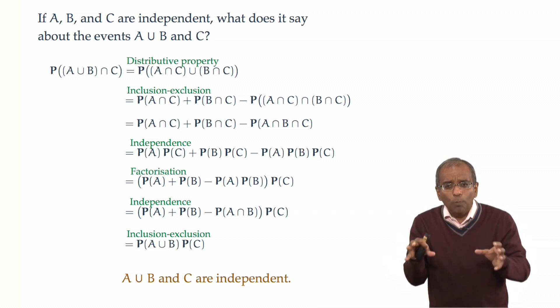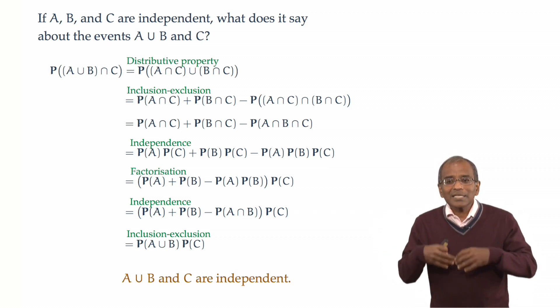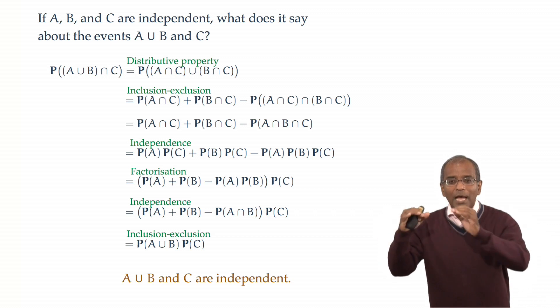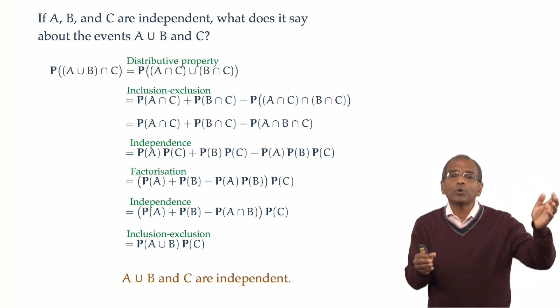Let's abstract the core principles that we have seen in our two examples. The first example said that if you have independent events and you complement one or more, you still get independent events. The second example says in words that if you have independent events and you form new events from some subgroup, then these new events are independent of those that were left out.